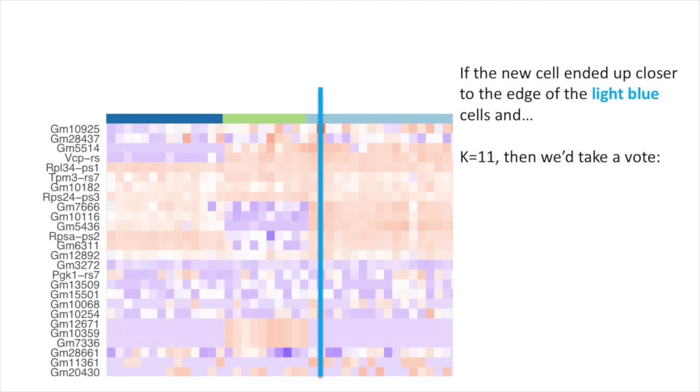If the new cell ended up closer to the edge of the light blue cells and K equals 11, then we'd take a vote. Seven nearest neighbors are light blue and four are light green. So we'd still go with light blue.